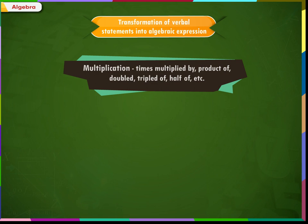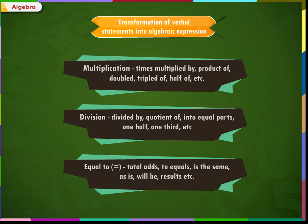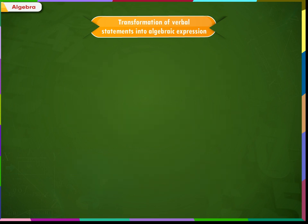The vocabulary used to signify multiplication includes: times, multiplied by, product of, doubled, tripled, of, half of, etc. The vocabulary used to signify division includes: divided by, quotient of. The vocabulary used to signify equality includes: equal to, equals, is the same as, is, will be, results, etc. Let us see some other examples where verbal statements are converted into algebraic expressions.